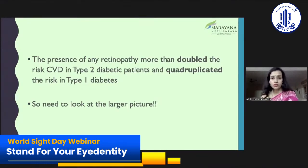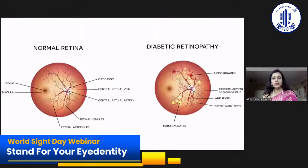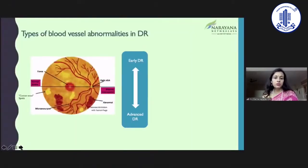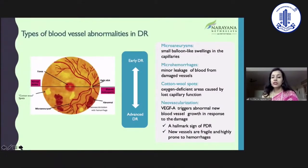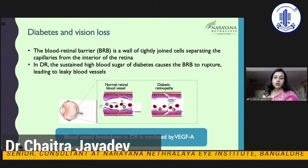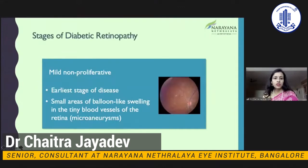We really need to look at the larger picture and make sure the patient goes for a full workup and management. Pathophysiology involves microvascular changes leading to hemorrhages and exudates. There are many blood vessel abnormalities — new blood vessels form, start leaking, bleed, and give rise to neovascularization, which becomes the hallmark of advanced disease. Because of blood vessel breakdown, there is fluid collection or edema which causes blurring of vision.